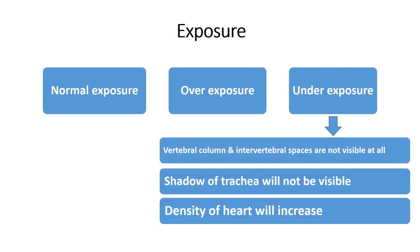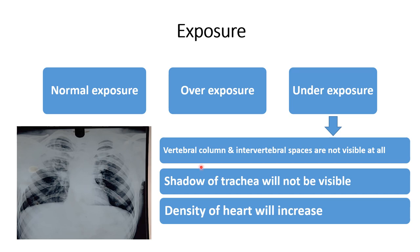In underexposure, the vertebral column and intervertebral spaces are not visible at all — the vertebral column is totally opaque. The shadow of the trachea is also not visible, so we cannot comment on it. The density of the heart increases in underexposure, so the heart shadow appears denser. So the second point — exposure — can be normal, over, or under, and according to these features we can comment on the exposure.